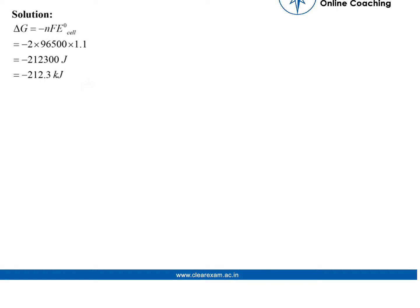To calculate the Gibbs energy, we use the formula ΔG = -nFE⁰cell. Here, E⁰cell = 1.1V, F = 96500 C/mol, and n = 2. Multiplying all the values gives ΔG = -212.3 kJ, which is the Gibbs energy for the reaction.